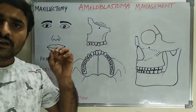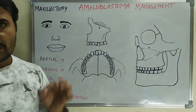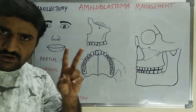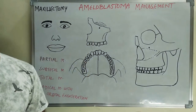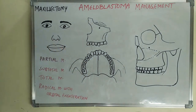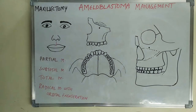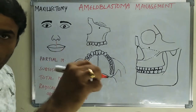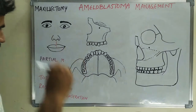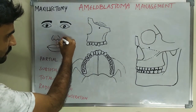The approach used for maxillectomy is called the Weber-Ferguson incision. There are two modifications for that: the first one is Lynch modification and the second one is Dieffenbach modification. Looking at the diagram, first we take a vertical incision in the philtrum, and that should be extended through the vermilion border to the underlying maxilla.